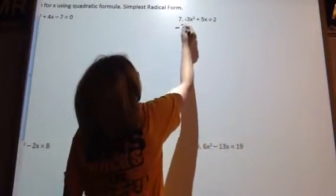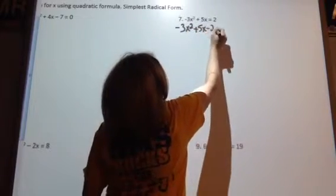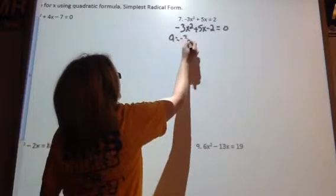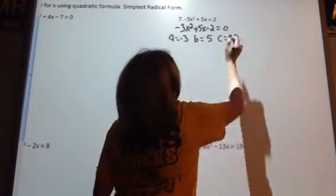So we're going to subtract 2 to both sides. Now we can identify a, b, and c.